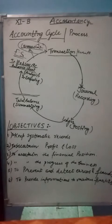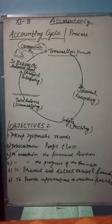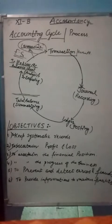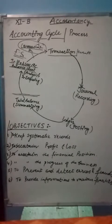If we record transactions, the chances of errors and frauds are very low. The objective of accounting is to prevent and detect errors. If something is wrong, we can detect it. If employees do something improper with cash, then we can detect it.